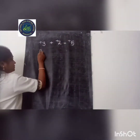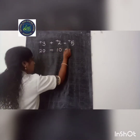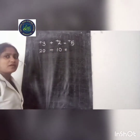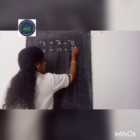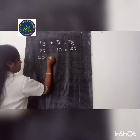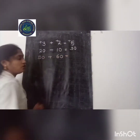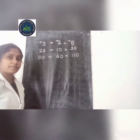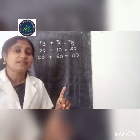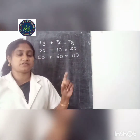Another example: 20 plus 10. Both numbers are positive, so 20 plus 10 equals 30, which is also a positive number. Next, 50 plus 60 equals 110, which is also a positive number. So the first rule is: if we add 2 positive integers, we will get a positive integer.